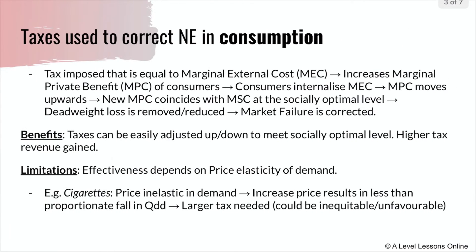It's usually quite an effective solution. Looking at the case of consumption, a tax that is imposed will usually be equivalent to whatever the marginal external cost (MEC) is. If you recall MEC from the video we covered on negative externalities, it is essentially the divergence between MSC — the social marginal cost — and the private marginal cost (MPC). This increases the MPC of consumers, because the tax is levied on producers, who then pass it on to consumers in the form of higher prices.